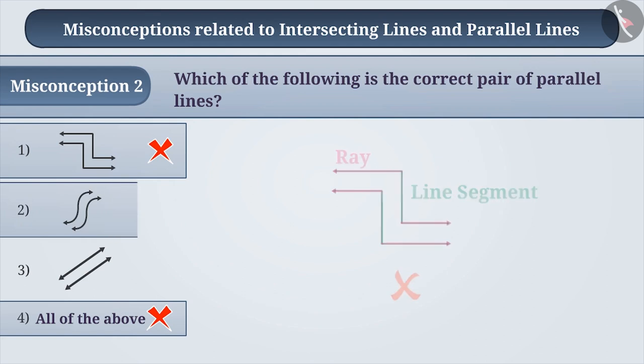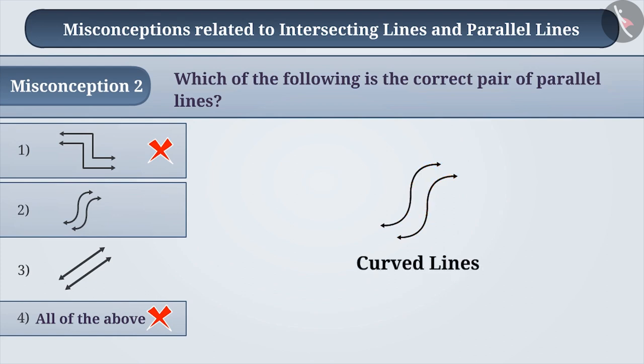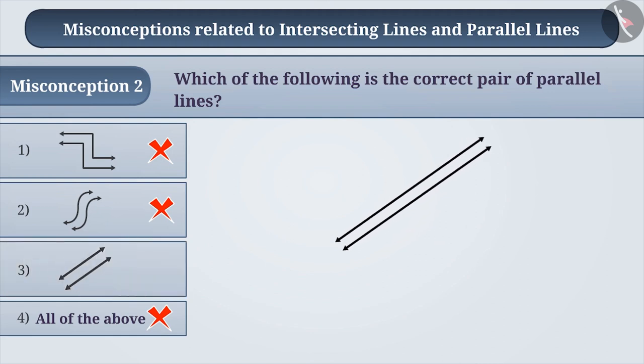Similarly, figure represented in option 2 is not extending in straight form rather extending by turns. We call these curves or curved lines. Correct understanding is that a line extends in both directions without any turns. Since these lines given in option 3 are not intersecting, these are parallel lines. Hence, only option 3 represent parallel lines.